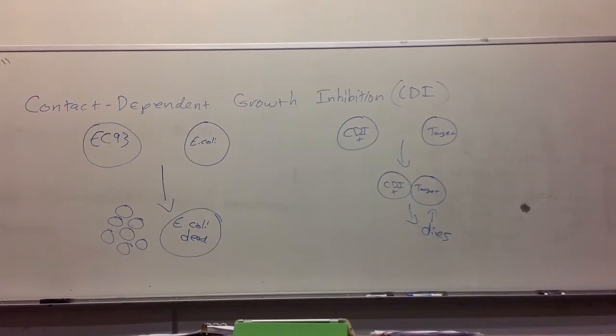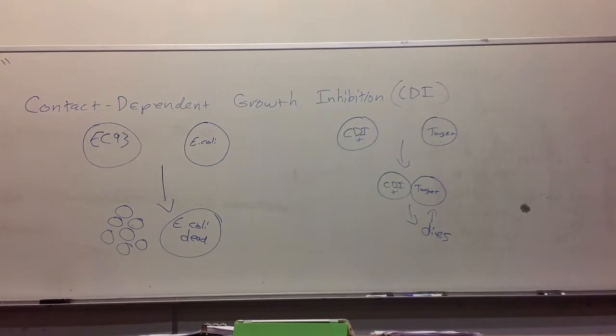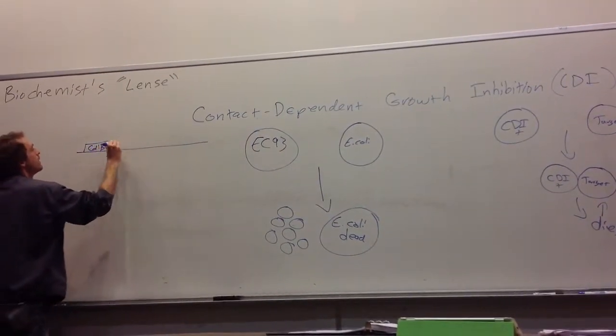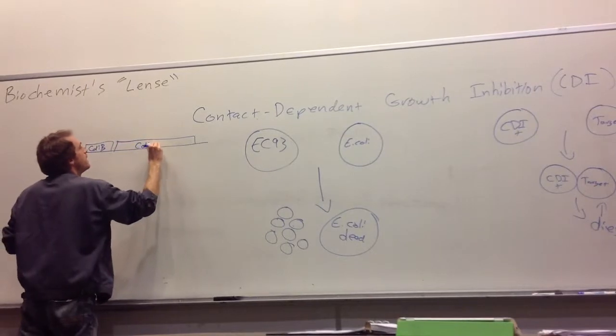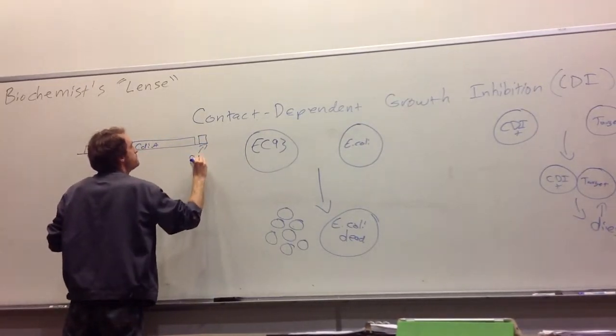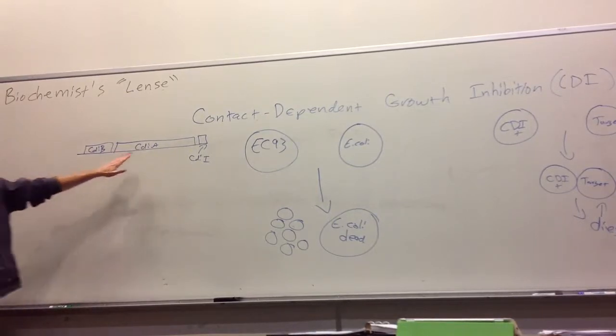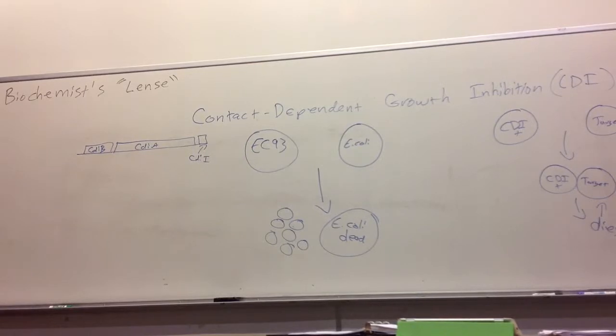Since David's a geneticist, he wants to know what are the genes involved. What he found is EC93 has just three genes that are responsible for this. Three genes all hooked up in one operon. There's CdiB, CdiA, and CdiI. You can take these three genes, stick them in any E. coli, and it'll kill everyone else. That's how he isolated the genes. He made a library, and this guy was the survivor after growing them up together. He killed everyone else, so it's really easy to pull these genes out.